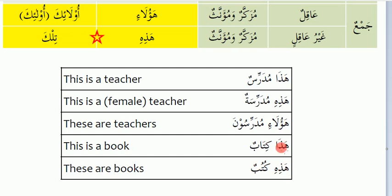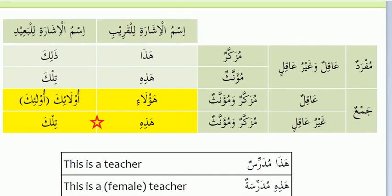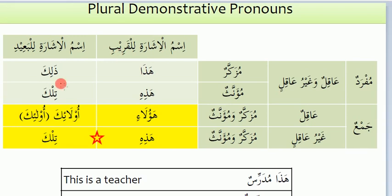So Haazihi and Haaza are used for singular, and Haulai for plural, as well as for near things. Zalika for far things, masculine noun. Tilka for far things, feminine noun. Ulaika for aaqil plural far, as well as for muzakkar and muannas. And Tilka we use for far things, muzakkar and muannas, but for the ghair aaqil.